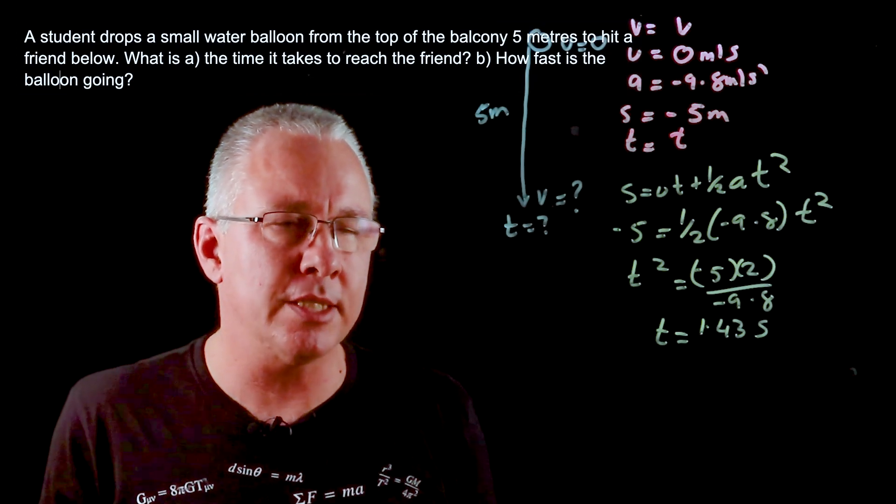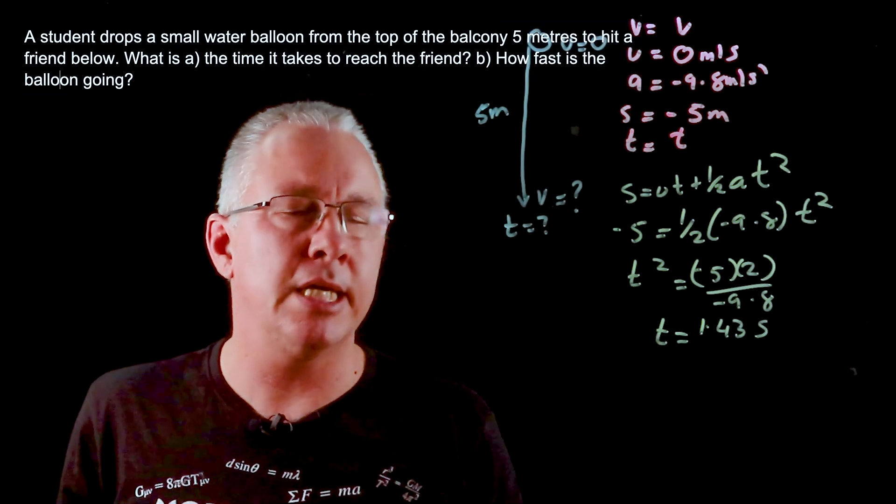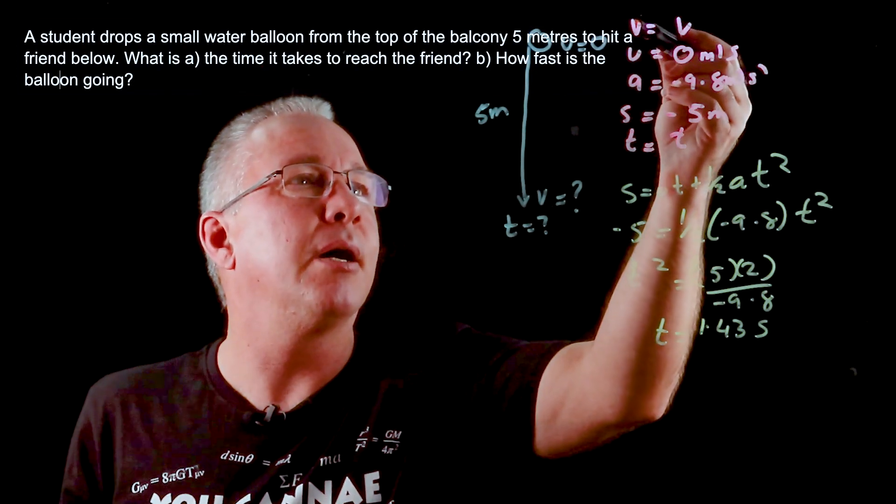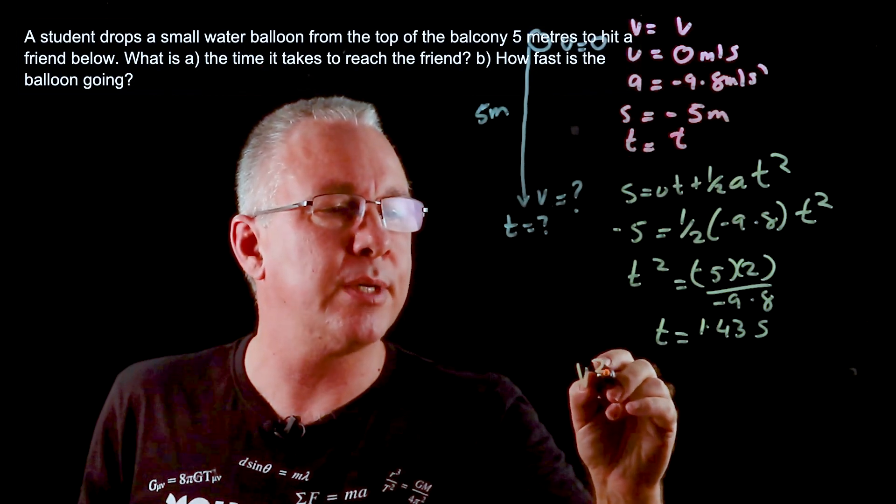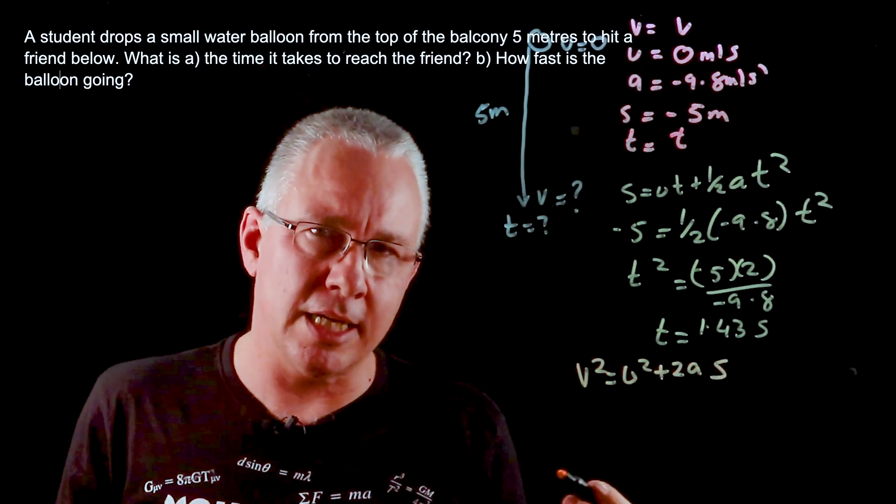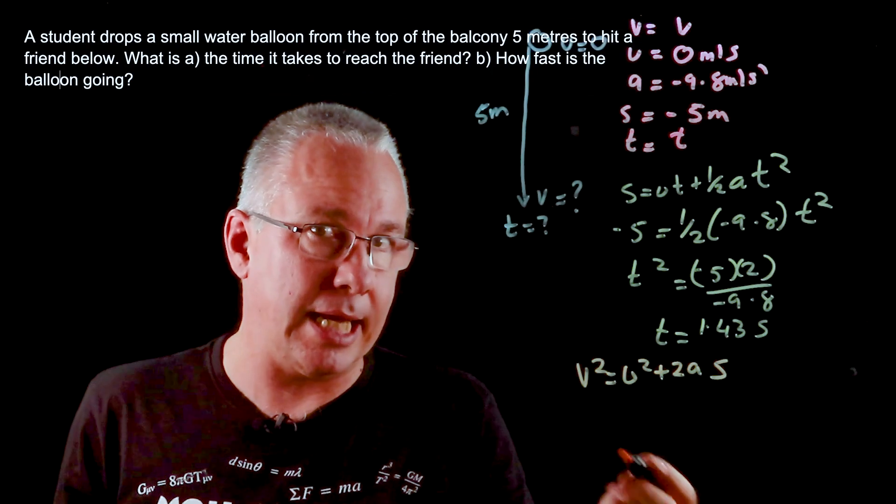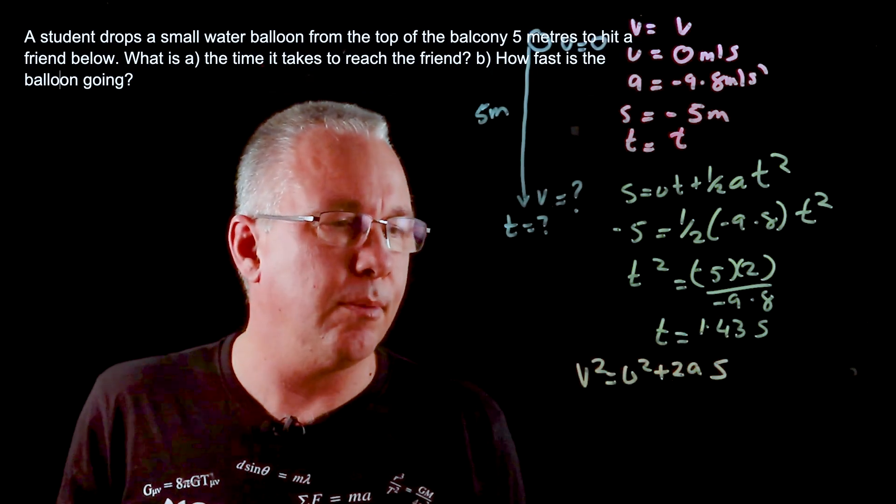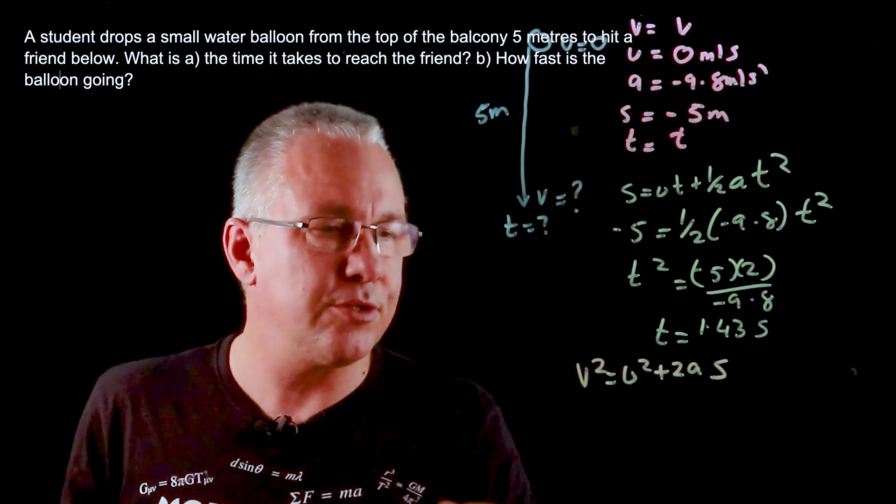If I wanted to work out the velocity, I could use T, but I don't have to because velocity can be determined by V, U, A, and S. V² = U² + 2AS. You can use V = U + AT since we just calculated T, but I'm going to use this formula to demonstrate it.